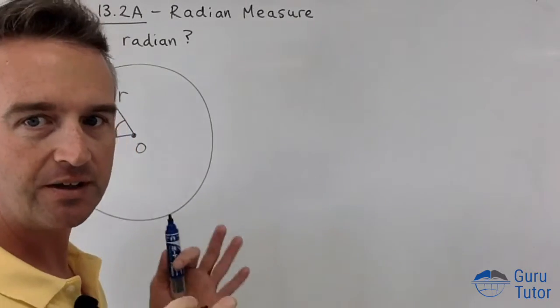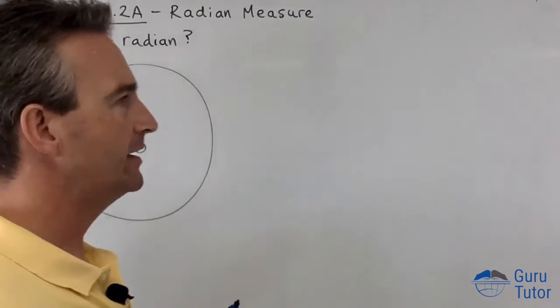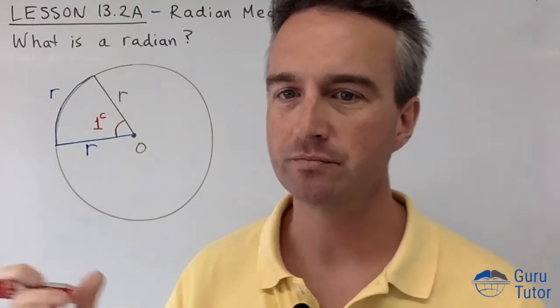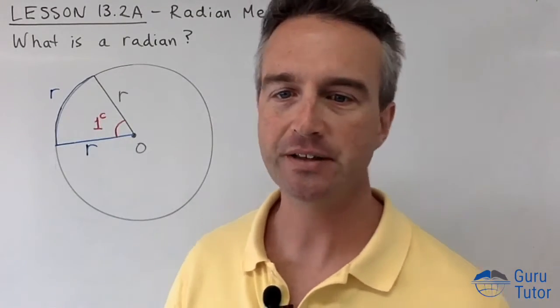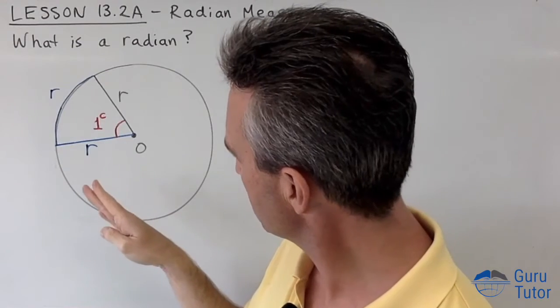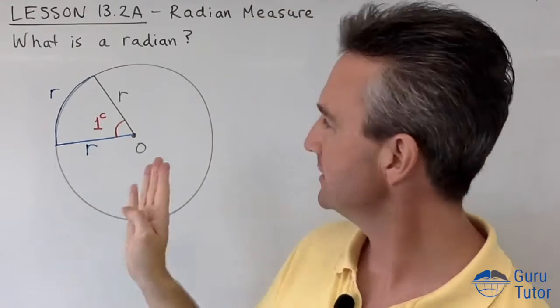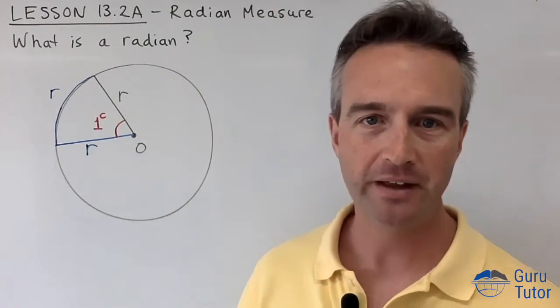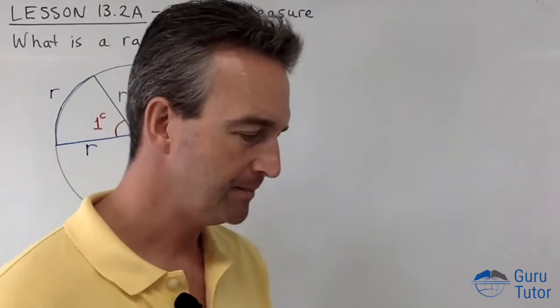When we usually describe radians, we have a little c, and that little c means circular measure. So that is the definition of one radian. Now how big is that angle if we're going to convert that into degrees? Can you have a guess? Well, it's somewhere between 45 and 90, isn't it?